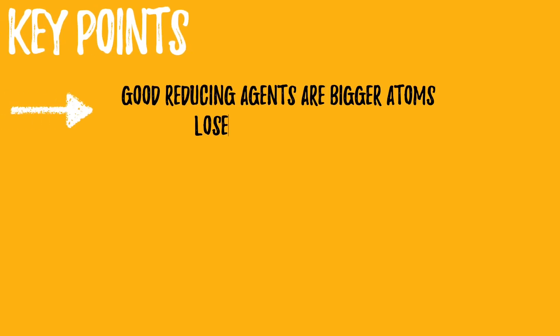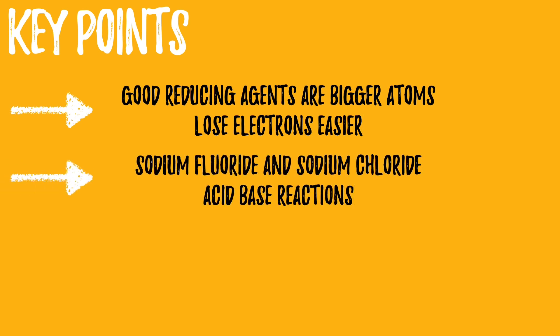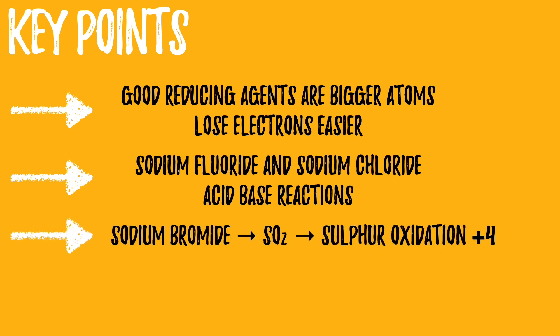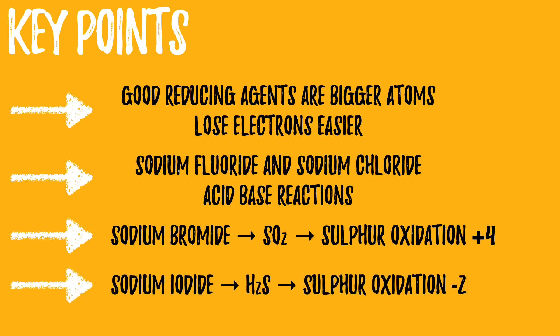Four key points from today's session: the bigger the halide ion the better reducing agent. Sodium fluoride and sodium chloride have acid-base reactions producing hydrogen halides. Sodium bromide acts as a reducing agent and reduces sulfur to an oxidation state of plus four in sulfur dioxide. And sodium iodide is an even better reducing agent and reduces sulfur to the oxidation state of minus two in hydrogen sulfide.